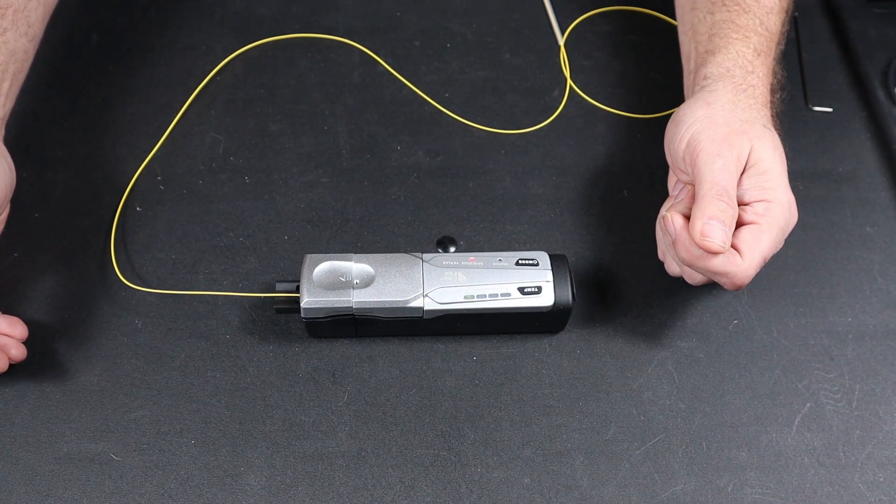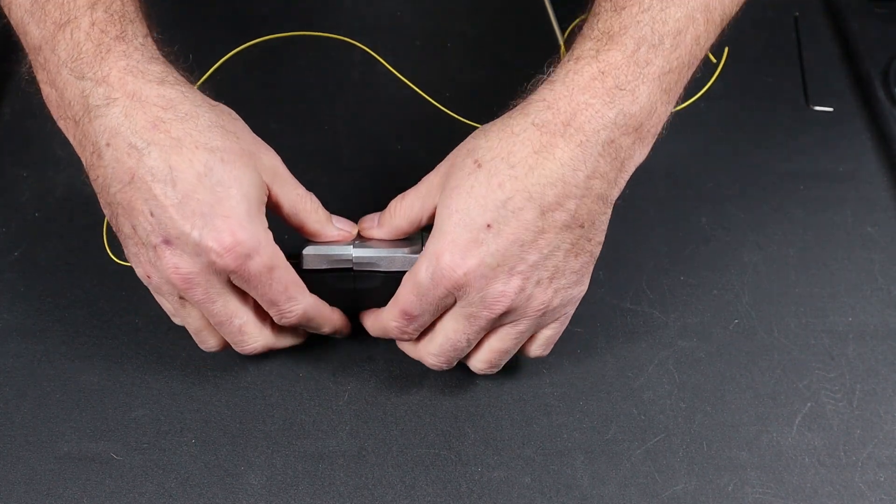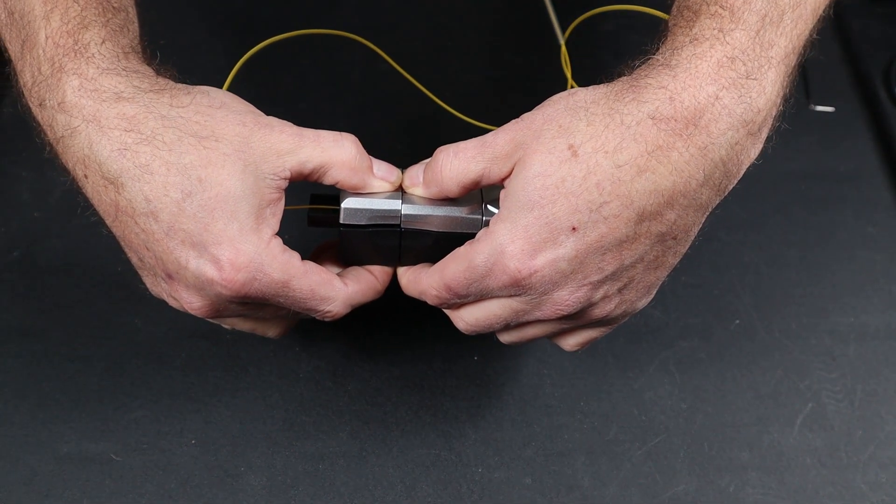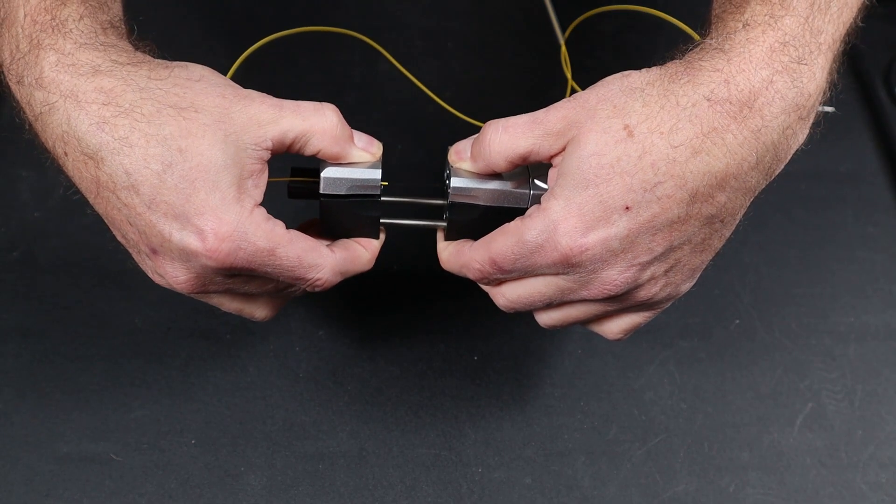Wait for the beep. Once it beeps, firmly squeeze on both the divots on your stripper and pull apart.